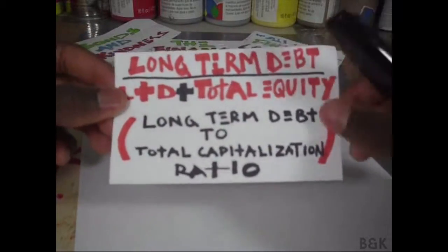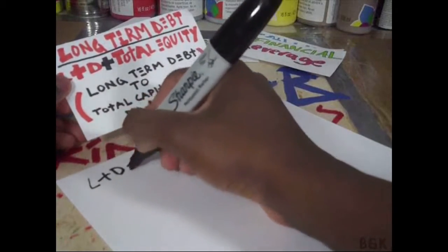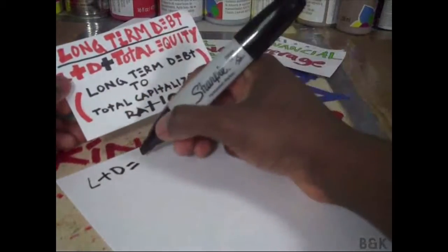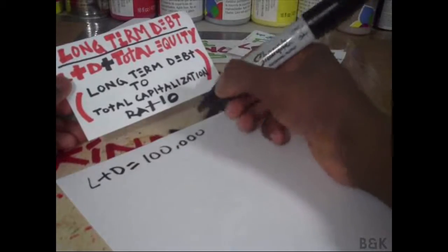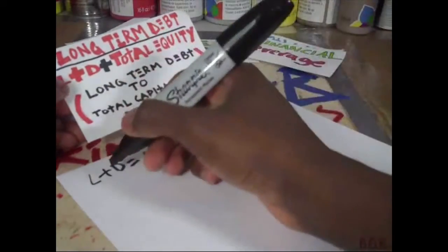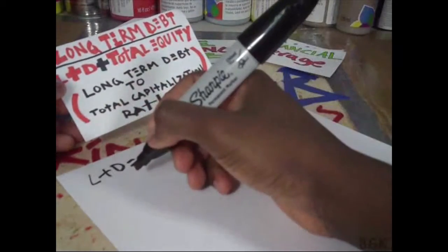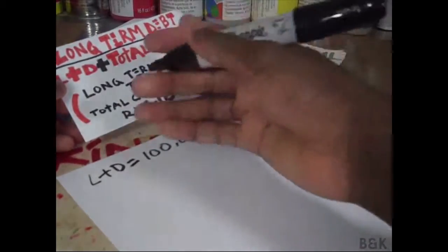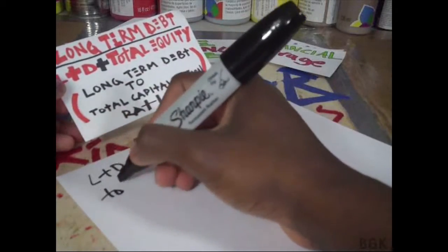Let's look at an example. We'll say our long-term debt equals $100,000. I'm sorry if I'm not very excited to explain this one, but I just want to get it out of the way. So our long-term liability is $100,000.